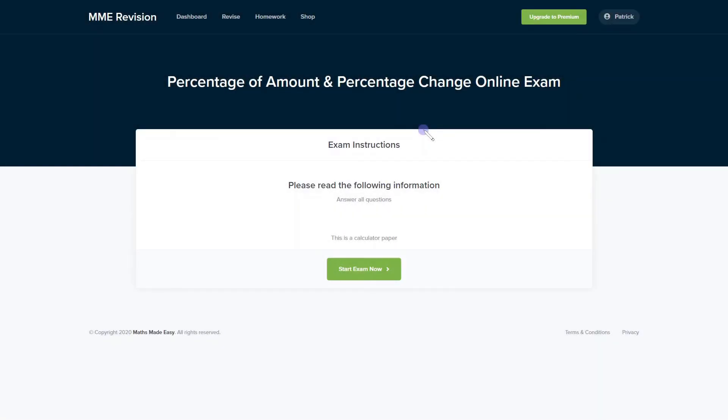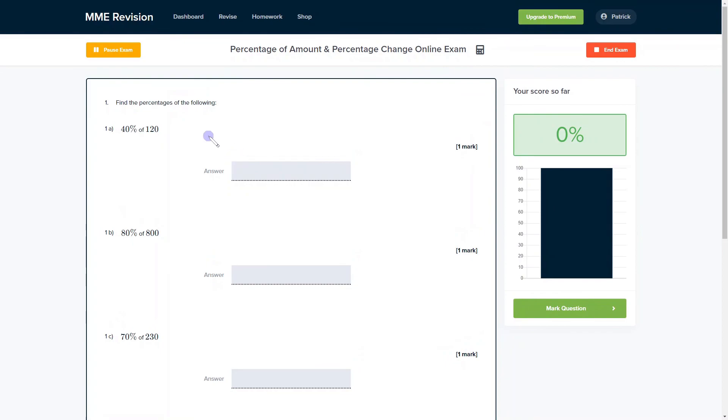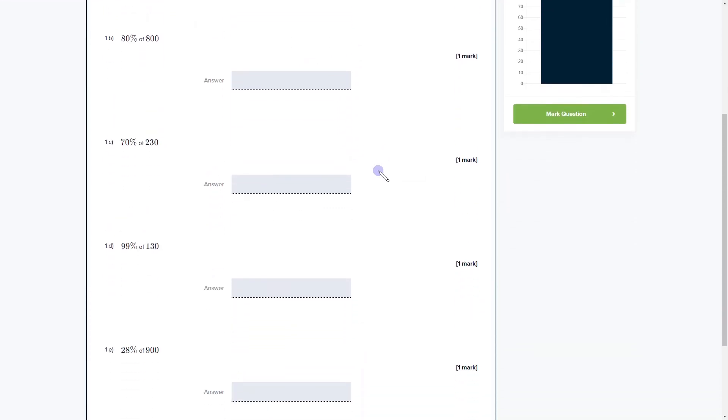So being able to work with percentages is an essential skill, so it's important that you get a lot of practice. You can do so with our online exam. It's available through our revision platform and if you take the test you'll find loads of different questions and you get instant feedback on all of them. So this is really good if you want to keep track of the areas that you're weakest at and where you need to improve. So if you're interested then click the link below. It will take you straight there.